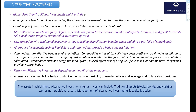The third characteristic of alternative investments is that they are more illiquid than their traditional counterparts. It is difficult to readily sell a real estate property compared to shares of Tesla, Microsoft, or Apple. You can buy or sell those shares in the blink of an eye, but it usually takes a lot of time to exit a real estate property.